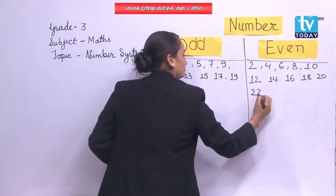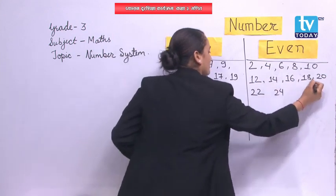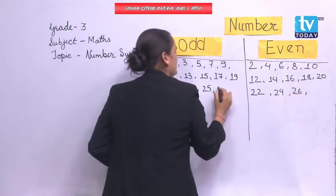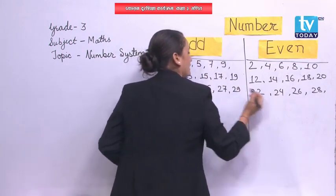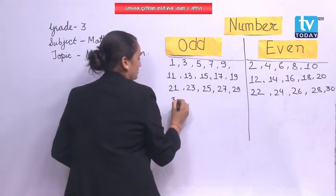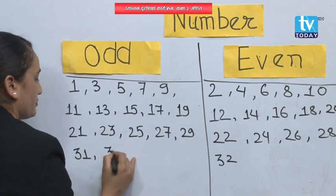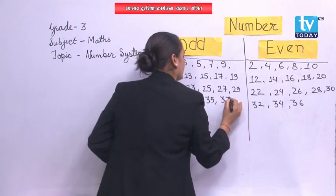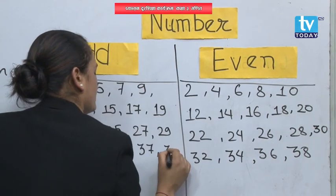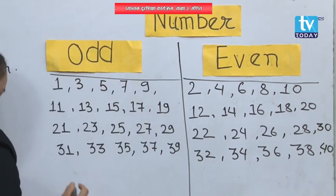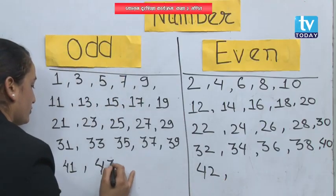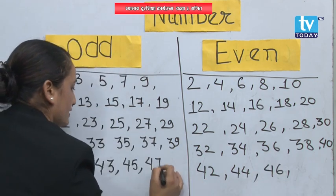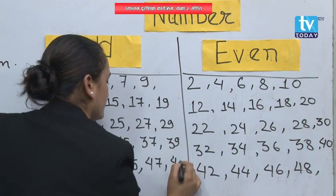Then 21, 22, 23, 24, 25, 26, 27, 28, 29, 30. Then 31, 32, 33, 34, 35, 36, 37, 38, 39, 40. Then 41, 42, 43, 44, 45, 46, 47, 48, 49, 50.